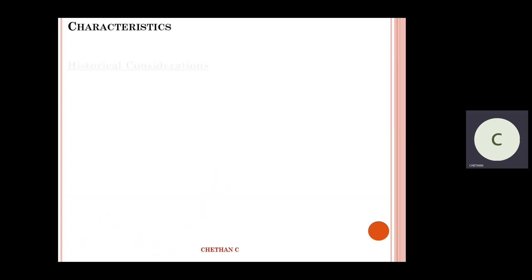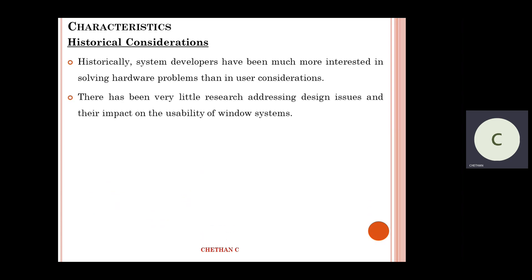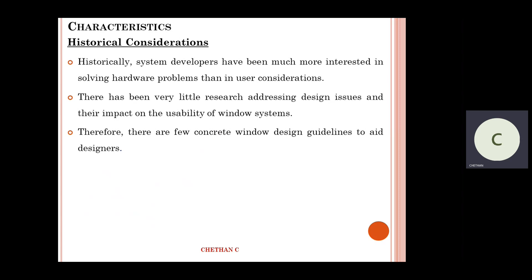The first one — historical considerations. Historically, system developers used to spend a lot of time, or were more interested in solving the hardware problems than in user considerations. There has been very, very little research addressing the design issues and the impact on visibility of window systems.